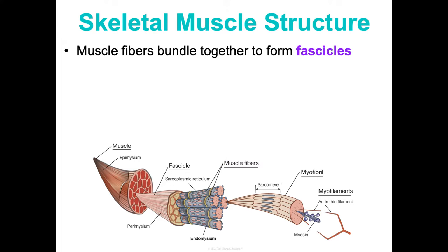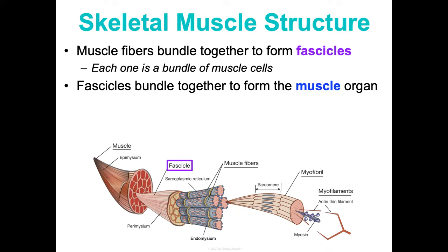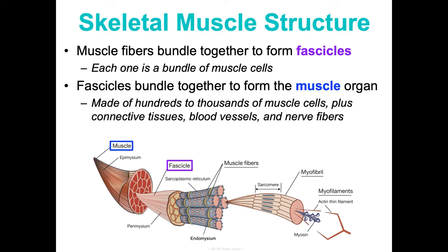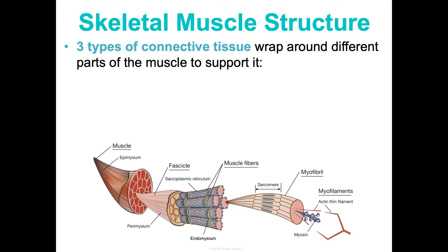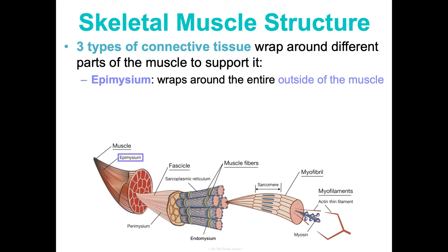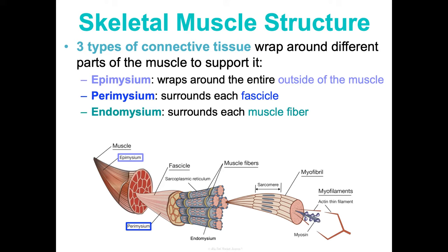Muscle fibers bundle together to form fascicles — each fascicle is just a bundle of muscle cells. These fascicles get bundled together to form the muscle organ, which is made of hundreds to thousands of muscle cells or muscle fibers, plus connective tissues, blood vessels, and nerve fibers. There are three connective tissues that wrap around different parts of the muscle: the epimysium wraps around the outside of the whole muscle, the perimysium wraps around each fascicle, and the endomysium surrounds each muscle fiber.